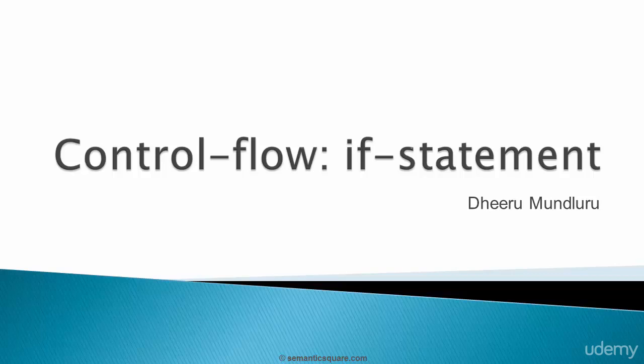Now let's look at control flow statements. A control flow statement is a type of statement that, as the name implies, regulates or controls the order in which statements get executed. In order to do that, they make use of Boolean conditions. There are several types of control flow statements like if statement, for statement, while statement, and so on.